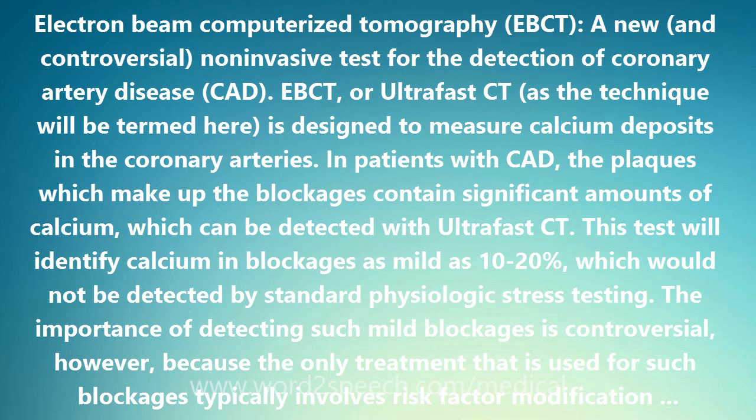A potential limitation of ultra-fast CT is that only a total calcium score is reported. This means that 2 or 3 separate blockages of about 30% each will result in the same score as a single 70-80% blockage. The ultra-fast CT does not give an image of specific separate areas of calcification.